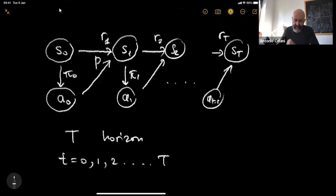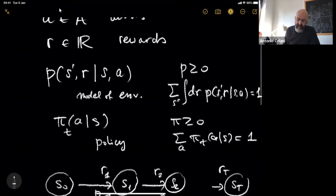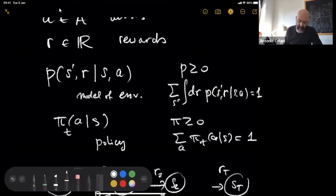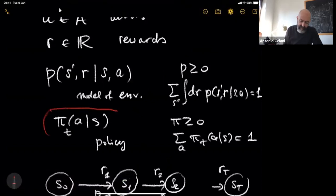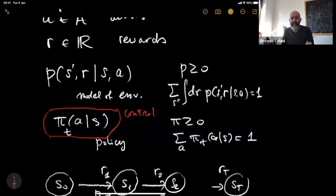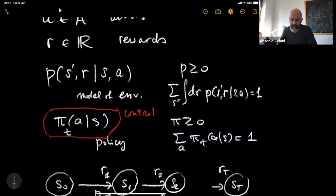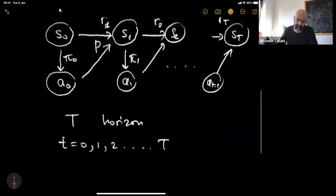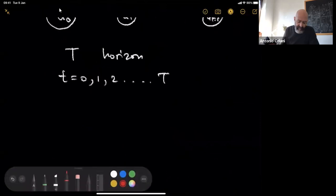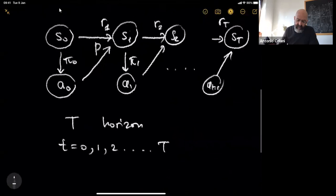Like I said yesterday, the control — the handle that you have on such a system — is through the policy, just this object here. This is the controllable part. On the other hand, the transition probability is not controllable. There is no way the agent can modify the transition probability P. The only thing we can do is properly select the actions to take at every time step in order to obtain a desired result.